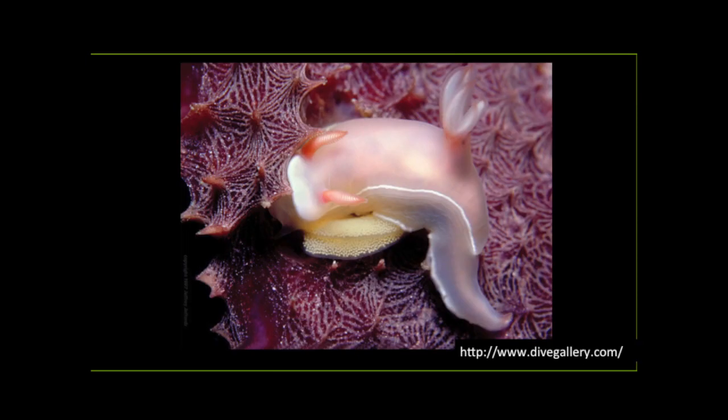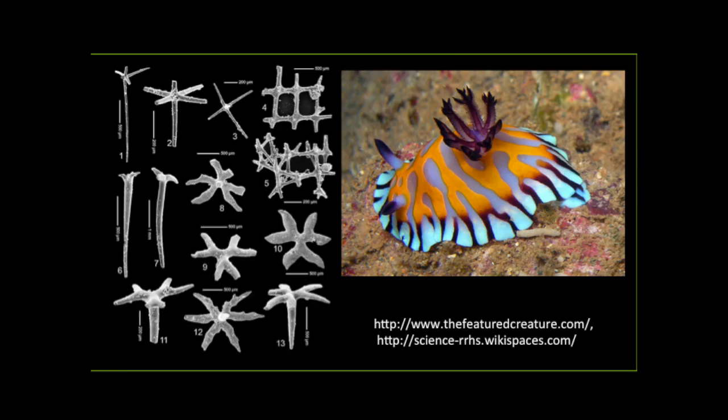So why do we care about sea slugs? We care about them because they do some really cool things — most notably, they steal everything they can get their mouths on. Some slugs eat poisonous sea sponges, don't get poisoned, and then steal the toxic substances for their own defense. Another group of sponge-eating slugs steal spicules — these spiky structures — from their sponge dinners, and also use these for defense.